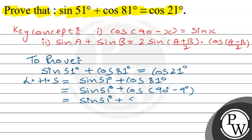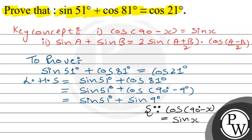cos(90° − 9°) equals sin 9°, because cos(90° − x) = sin x, as stated in our key concept. So the left-hand side becomes sin 51° + sin 9°.